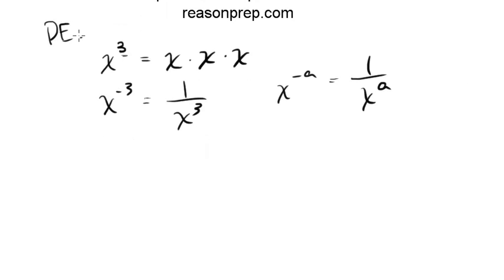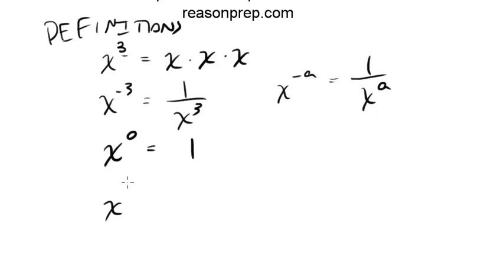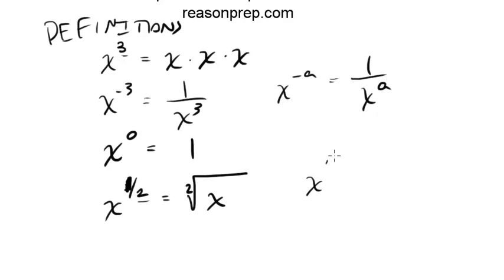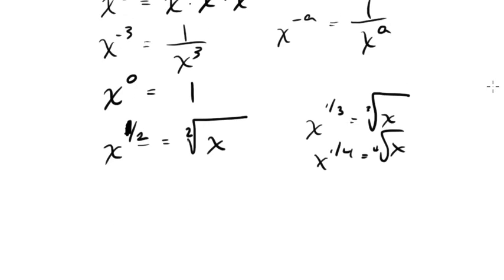Some other definitions: x to the 0 — anything to the 0 is 1, that's just the way it is. If you have a fractional exponent, like x to the 1 half, a fractional exponent turns into a radical where the denominator of the fraction becomes the radical index. So if it's a 2, it's a square root; x to the 1/3rd is a cube root; x to the 1/4th is a 4th root, and so on. If you have x to the 3 halves, this is just the same thing as the square root of x to the 3.